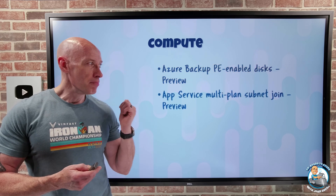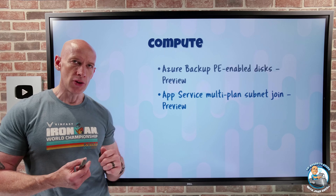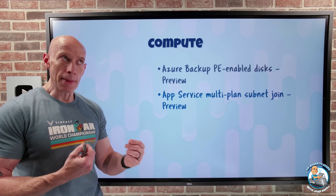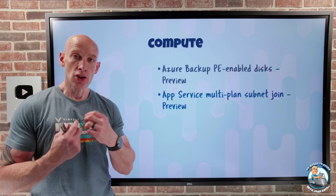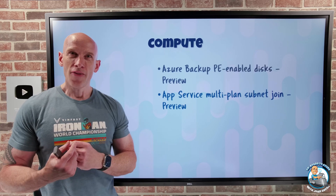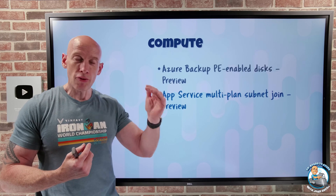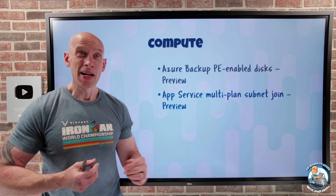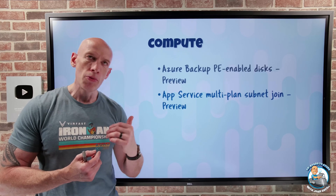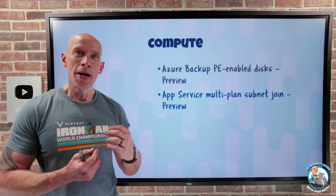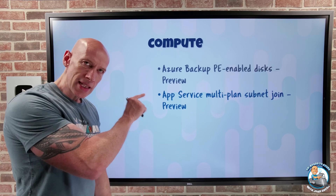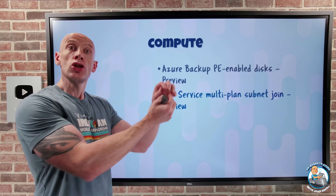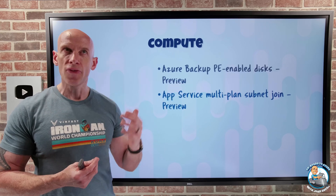App Service now has multi-plan subnet join in preview. Ordinarily, if I want to do a virtual network integration from an app service plan, each app service plan requires its own subnet. If I have lots of different app service plans, that means a lot of different subnets. Depending on how efficient I am with sizing those subnets, I have IP waste — and I'm also managing a lot of different network security groups, maybe user-defined routes. It's just a lot of overhead. This feature lets me have multiple app service plans share a single subnet, simplifying that management.